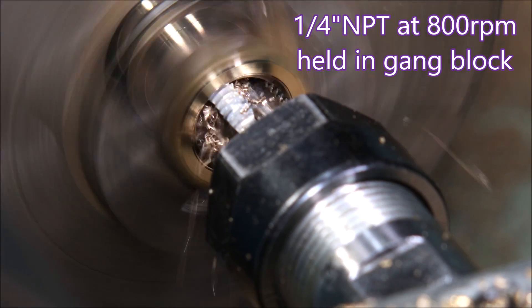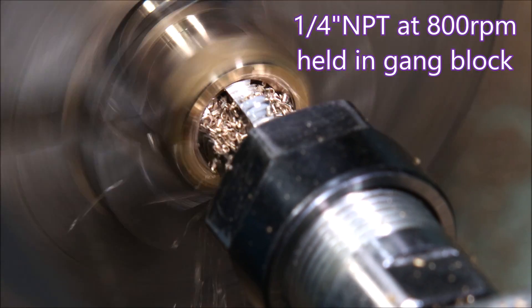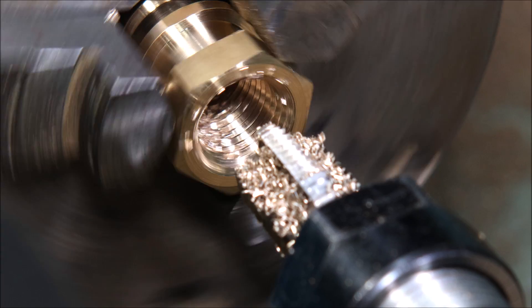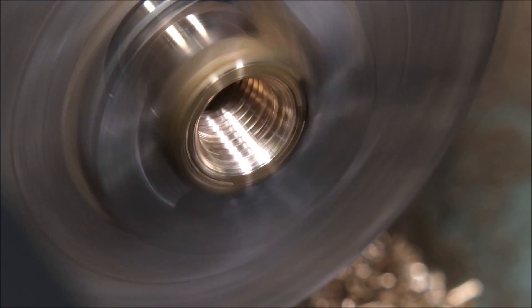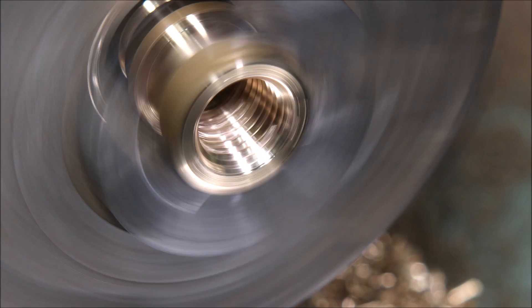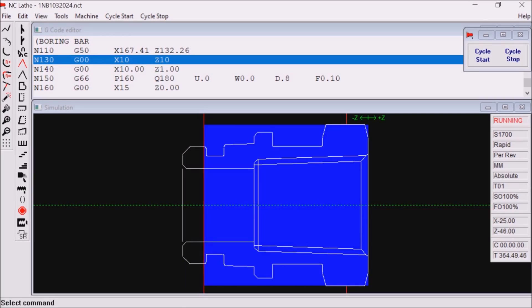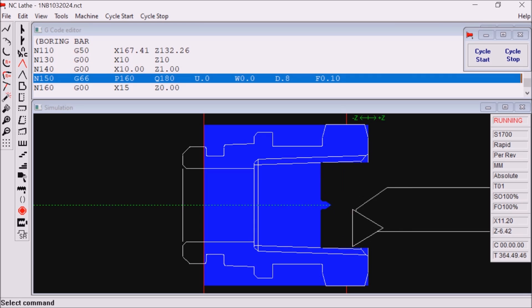This is a G84 tapping code. After reversing to extract the tap, the spindle spins forward again, even if I have a stop spindle line directly after the G84. Is that normal? I would appreciate it if you let me know in the comments.